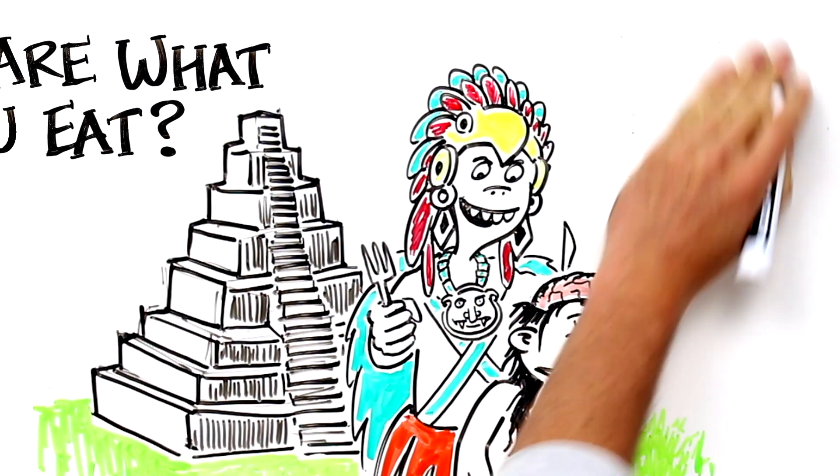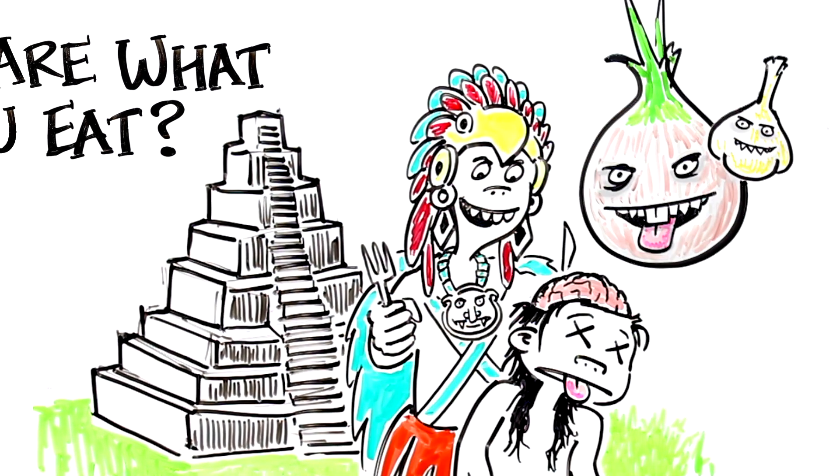In India, some cultures do not eat onion and garlic as they believe foods with strong odors led to aggressive and offensive behaviors.